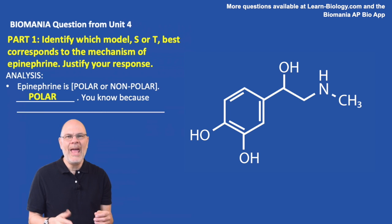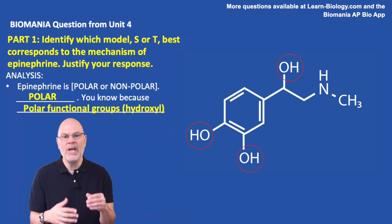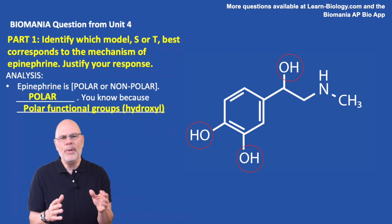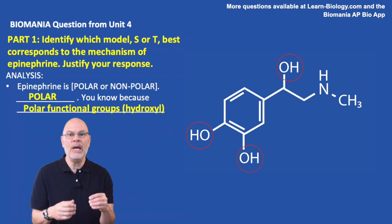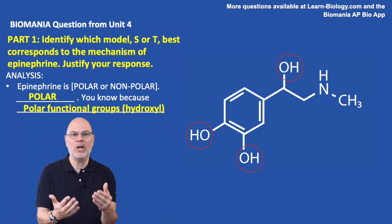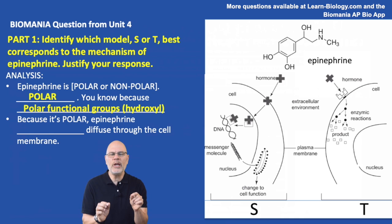Epinephrine is polar. The way that you know that is because if you look at the molecule, you can see all of these polar functional groups that are hanging off the outside. You don't really need to know the names of those functional groups, but you should be able to recognize that an OH is going to be polar, and that's changing the chemistry of this molecule so that it'll have the properties of a polar molecule — it'll dissolve in water, it'll be hydrophilic. Because it's polar, epinephrine blank diffused through the cell membrane — think about what word would make sense to go into that blank.